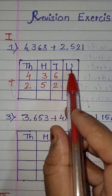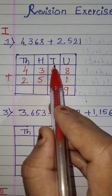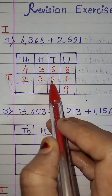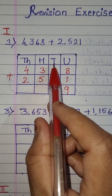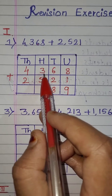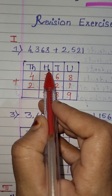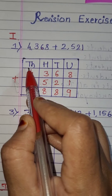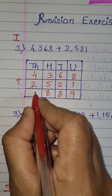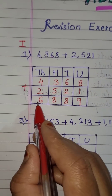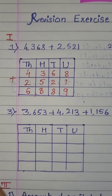After finishing with the units, go to the next highest place — the tens. 6 plus 2 is 8, write 8. Next, the hundreds place: 3 plus 5 is 8, write 8. Then the thousands place: 4 plus 2 is 6. So the answer is 6,889.